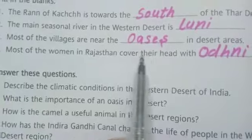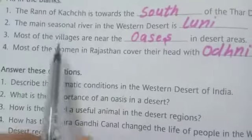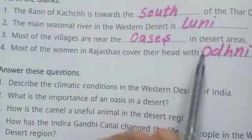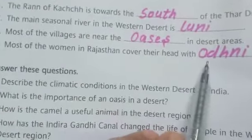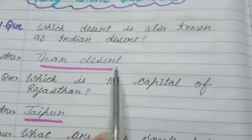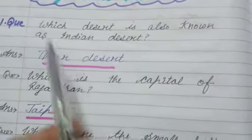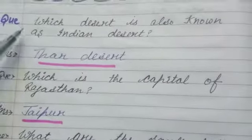Most of the women in Rajasthan cover their head with an Odney. Which desert is also known as the Indian Desert? Thar Desert.